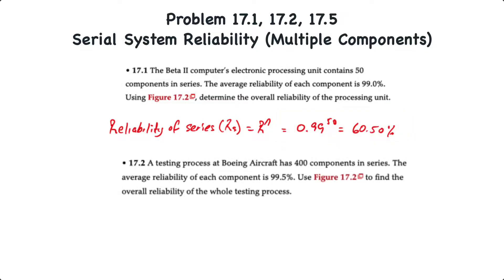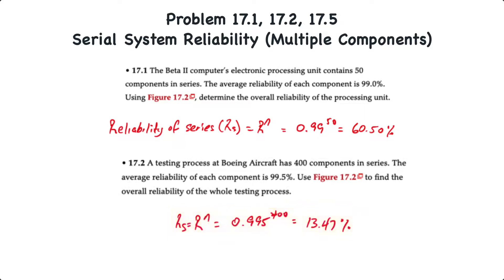For problem 17.2, a testing process at Boeing has 400 components in series and the average reliability of each component is 99.5%. Again, find the overall reliability of the entire testing process. The reliability of the series is equal to the reliability of each component to the exponent of n, which is equal to 0.995 to the power of 400 or 13.47%.